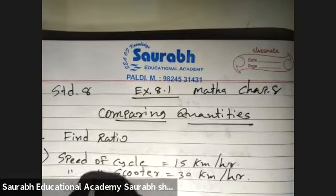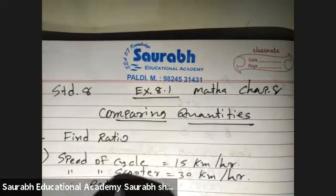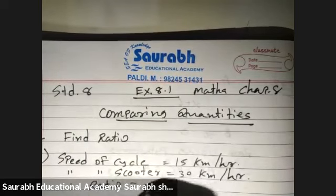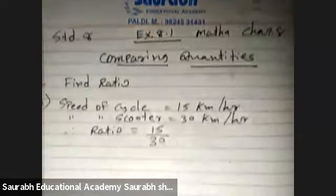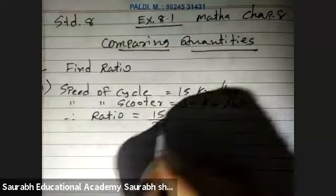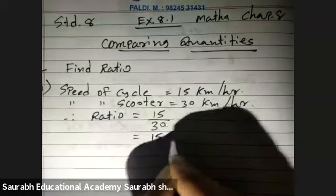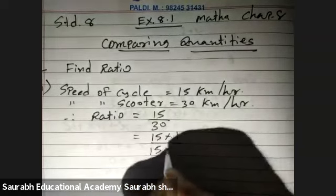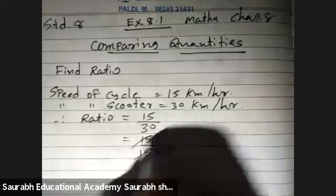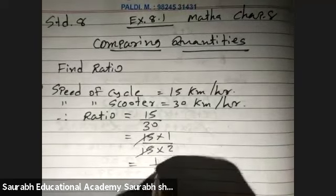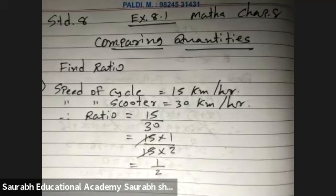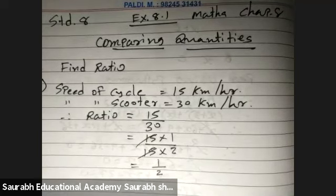Therefore, ratio is equals to 15 upon 30. 15 ones are, 15 twos are. Cut. Answer is 1 upon 2.